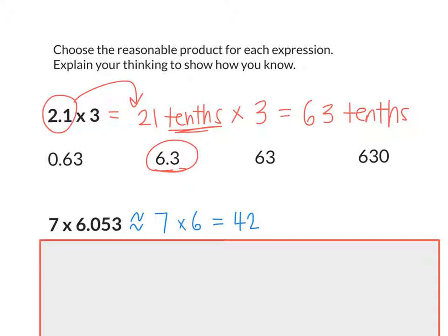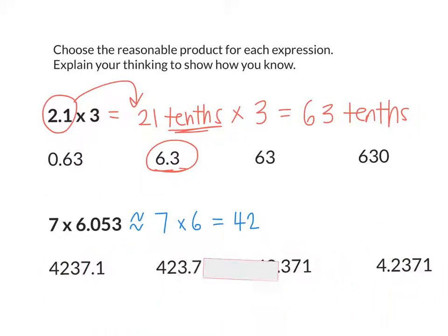Now that I know that my answer should be pretty close to 42, which one of those answer choices is the most reasonable? 42 and 371 thousands is closest to 42. That's correct. But we can also use what we know about place value to make sure we're correct.